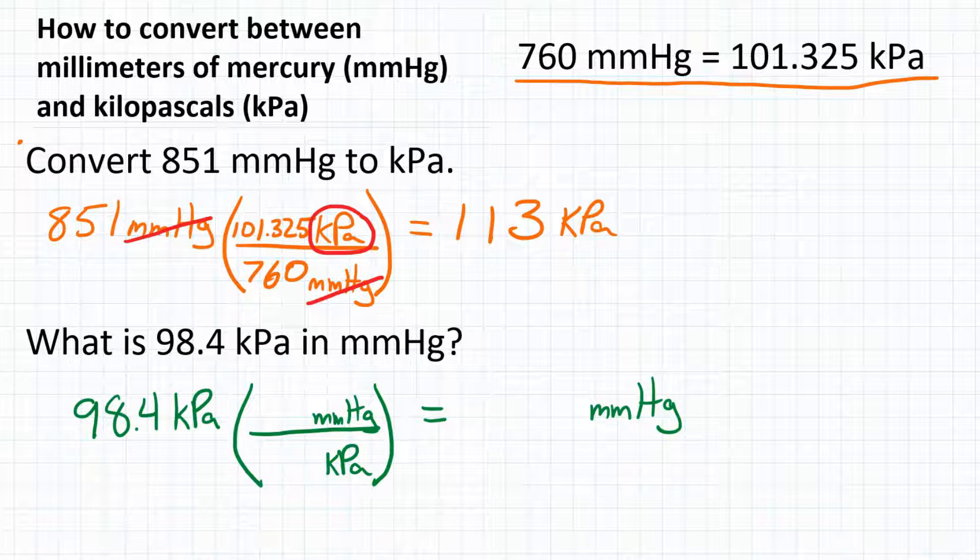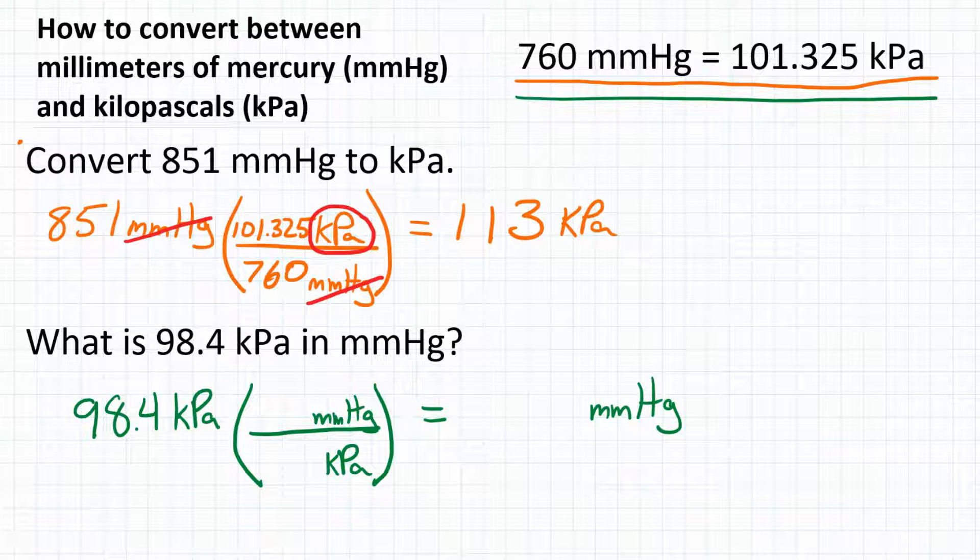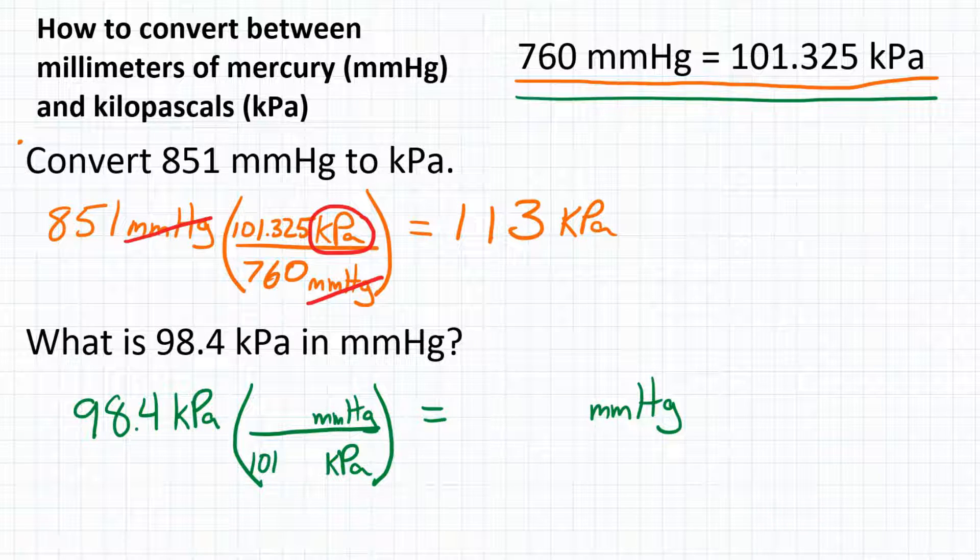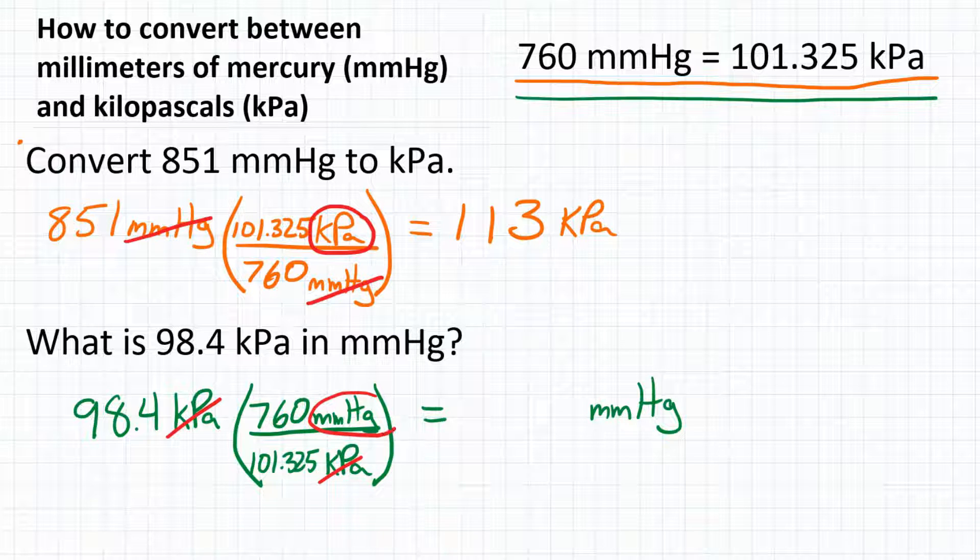We're going to have kPa on the bottom, and we're going to have millimeters of mercury on top, so our units cancel out in the way we need them to. We're going to use the same relationship for these two units, except we're going to have 101.325 kPa on the bottom, and we're going to have 760 millimeters of mercury on top. So that conversion factor is a reciprocal of the conversion factor we used above, and that's because we're going in the opposite direction. Looking at our units, our kPa will cancel out, and we will be left with millimeters of mercury.